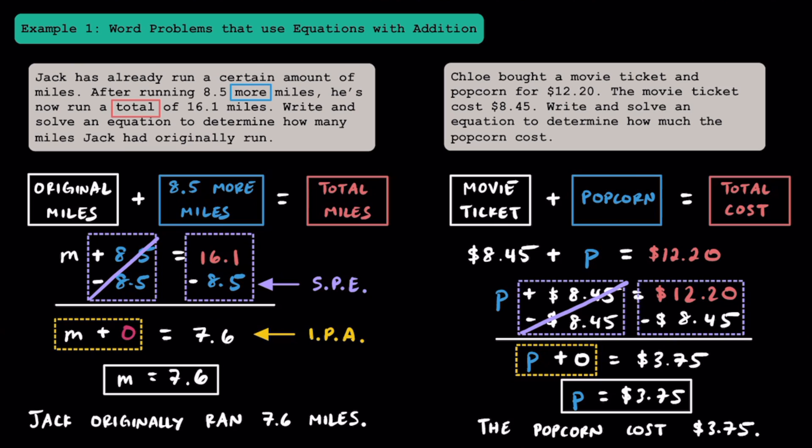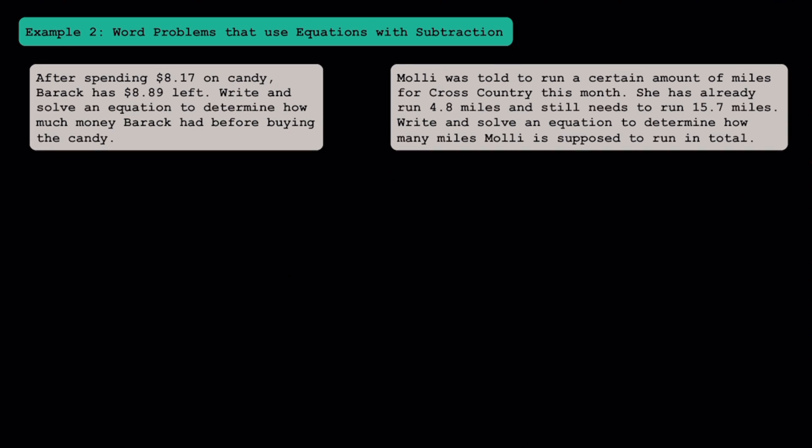The big takeaway from these two problems is that both represent two parts and a total — the two parts added together to make a total. Hopefully when you see future problems with similar scenarios, you can set up similar equations and solve them. In example two, let's take a look at some application word problems that need one-step equations with subtraction to represent them.